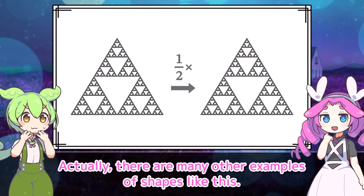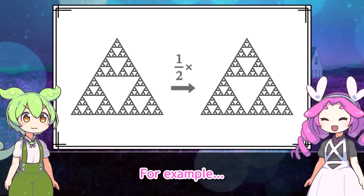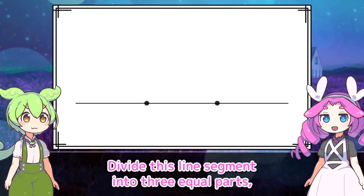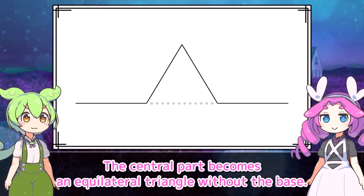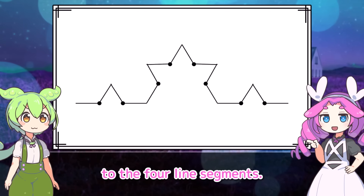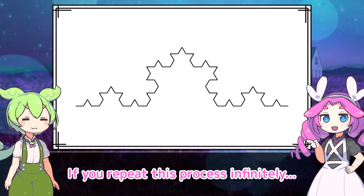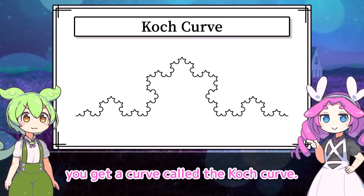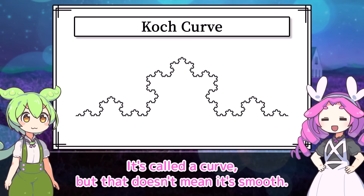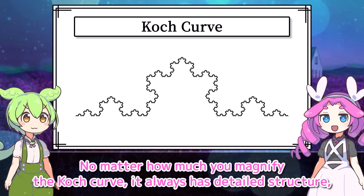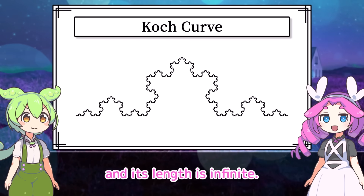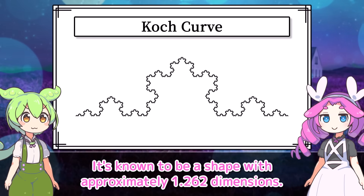Actually, there are many other examples of shapes like this. For example, first draw a line segment. Divide this line segment into three equal parts and transform it — the central part becomes an equilateral triangle without the base. Next, apply the same transformation to the four line segments. If you repeat this process infinitely, you get a curve called the Koch curve. It's called a curve, but that doesn't mean it's smooth — it just means it's connected from one end to the other. No matter how much you magnify the Koch curve, it always has detailed structure and its length is infinite. It's known to be a shape with approximately 1.262 dimensions.